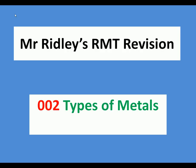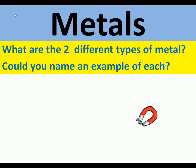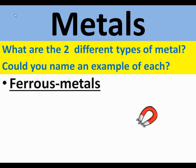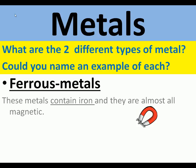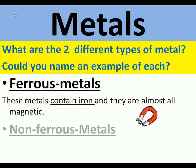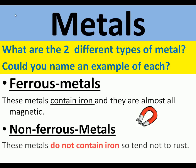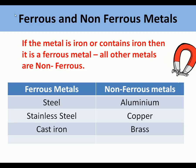This is Mr Ridley's RMT revision, video number two: types of metal. There are two different types of metal. Ferrous metals contain iron — any metals derived from or containing iron are ferrous metals. They are almost all magnetic and most of them rust. Non-ferrous metals don't contain iron, so they tend not to rust.